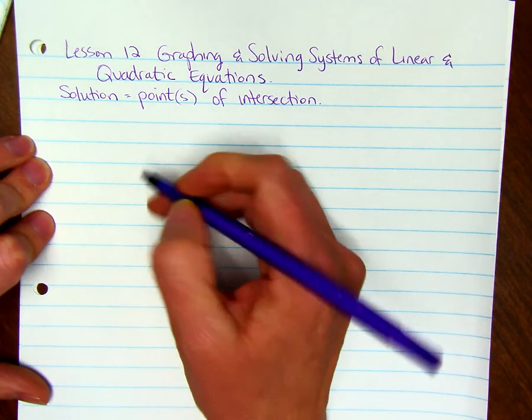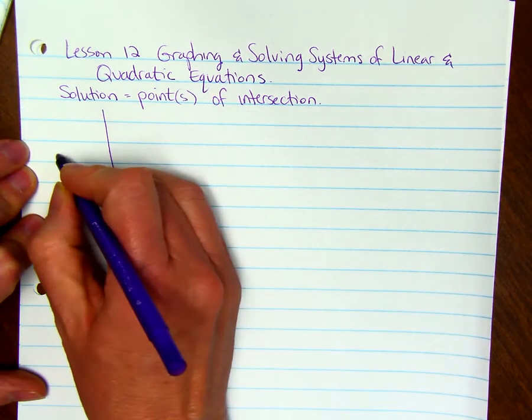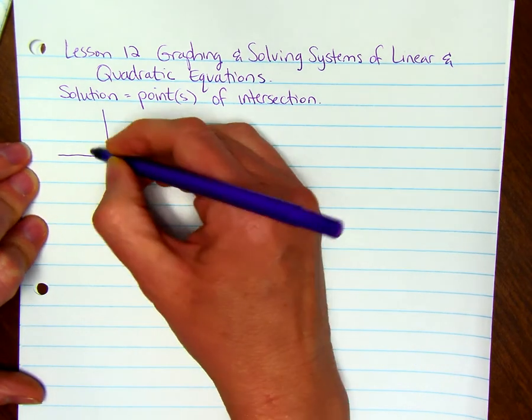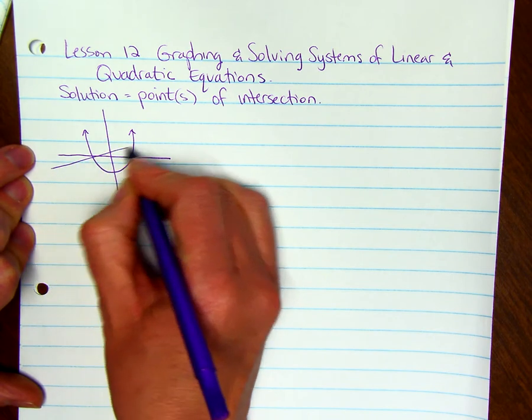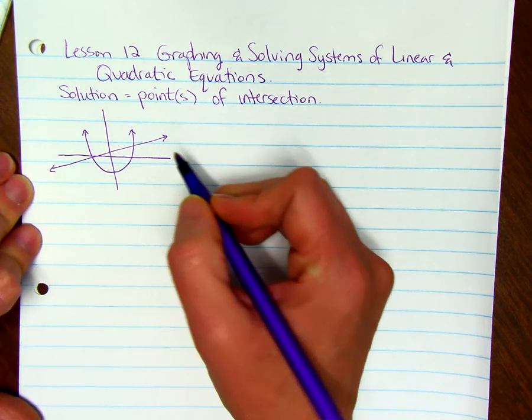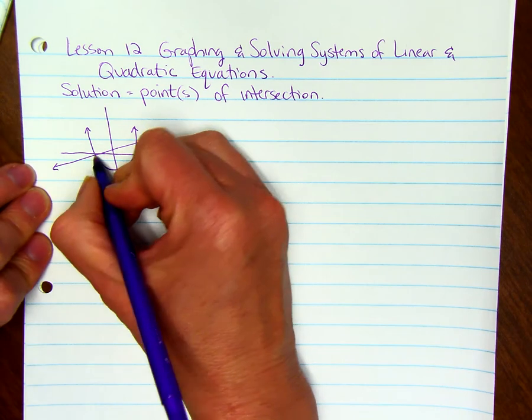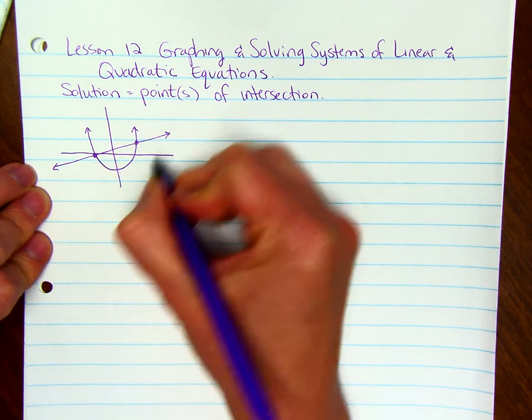A quadratic equation is a parabola and a linear equation is a straight line. So if we have a parabola and we have a straight line that goes through two sides of the parabola, we're going to have two solutions, and it's right where they intersect.